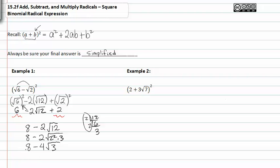So that's my final answer there. It's been simplified as far as it can be simplified. Let's move on to example two. Again, we have two terms raised to a second power, so it's a binomial squared.